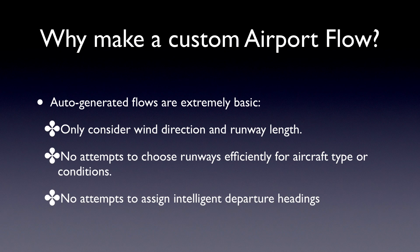So why bother making a custom flow if the sim is going to make one for you? Well, the one the sim makes is going to be extremely basic. It's only going to consider the wind direction and runway length, so it's just going to pick the longest runway that's most aligned with the wind currently. It's not going to make any attempts to pick the runway that's most efficient for traffic or for the aircraft type. It may put a 747 on a very narrow runway if it's long enough and wind-aligned, even though there's a giant runway that in the real world that aircraft would prefer. And also for departure headings, it's just going to do whatever ATC feels like — it has no notion of noise abatement or any other reason you may use departure headings.